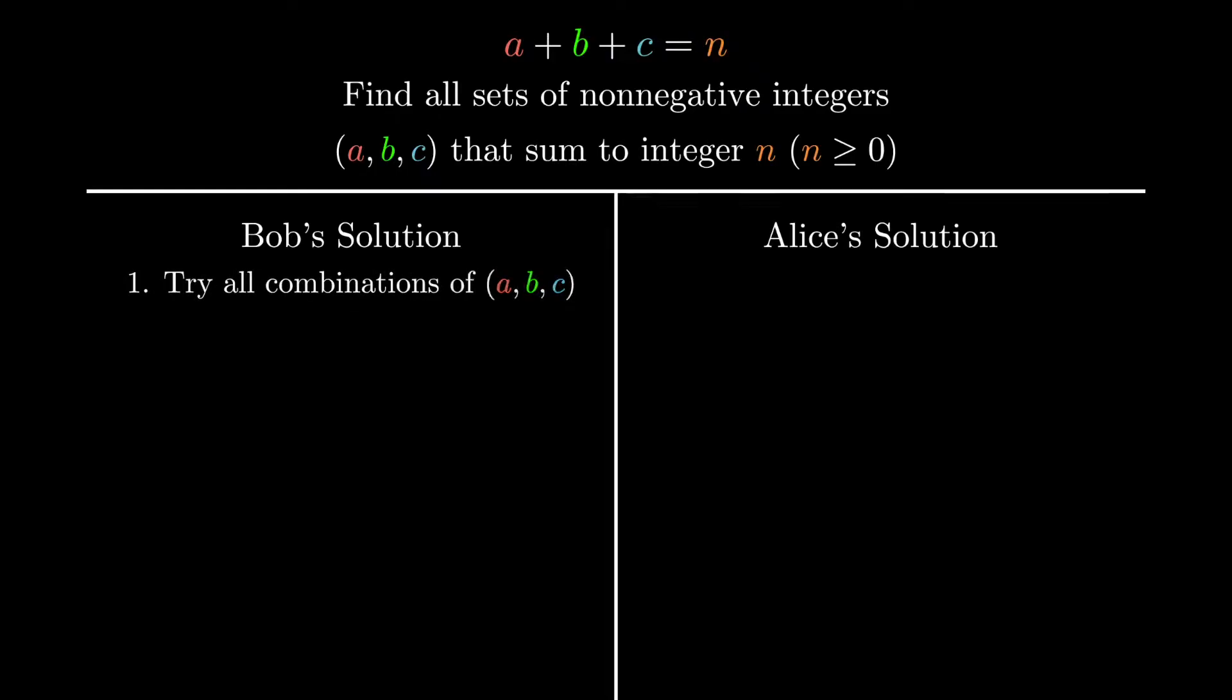In Bob's solution, he decides to try every combination of A, B, and C up to n, and whenever A plus B plus C is equal to n, he prints out A, B, and C. Here's a quick example of how his algorithm plays out for input n equals 3.